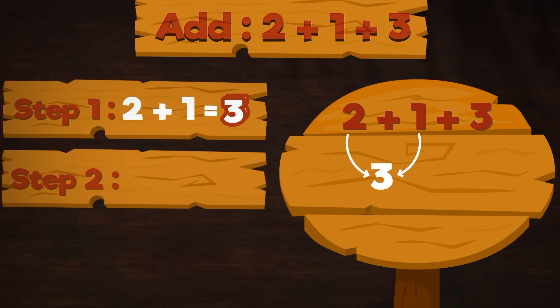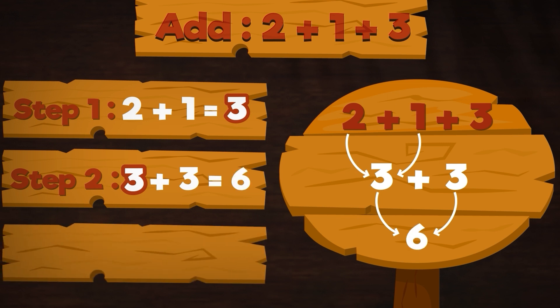Step two. The sum will be 3. Now add this sum to the third number. 3 + 3 = 6. So 2 + 1 + 3 = 6.